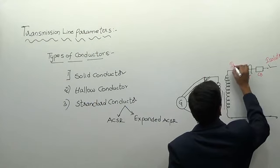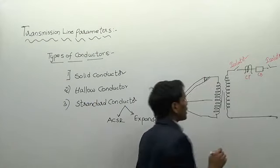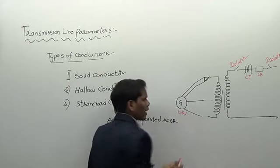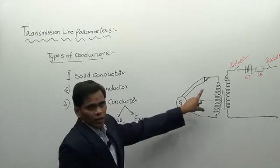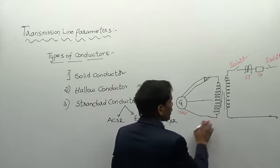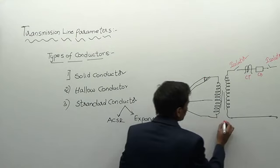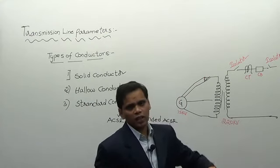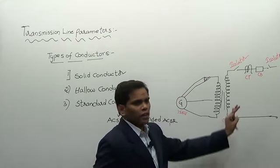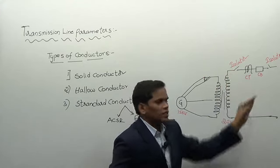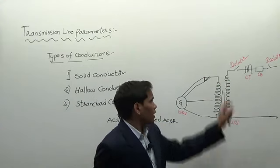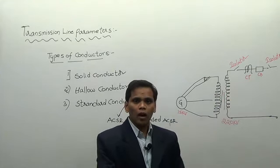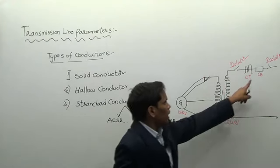At the generating station, we generate power at 15 kV. This generator transmits power through the lines, and at the generating station we have a step-up transformer which steps up the voltage to 220 kV. This 220 kV is then transmitted through the transmission lines. Before transmitting this power, we have protective equipment near the transmission line: isolators, current transformers, potential transformers to protect from higher voltages, and circuit breakers.